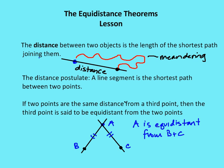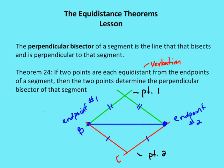If two points are the same distance, they're equal distance from a third point, then the third point is said to be equidistant from the two points. So if I have point A and it's the same distance from B and the same distance from C, then I know that A is equidistant from both B and C. And that's how I would say it: A is equidistant from B and C.